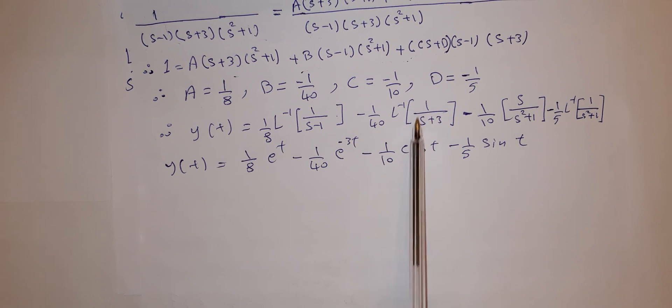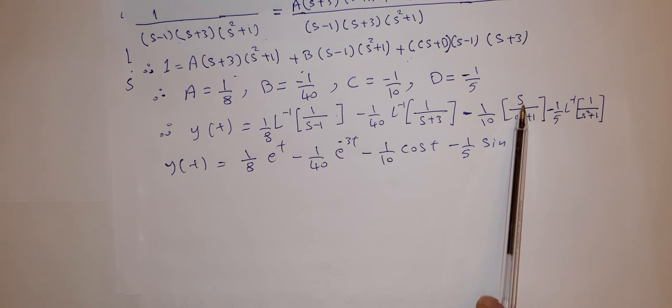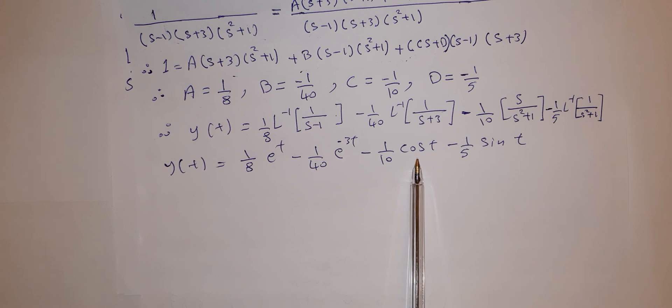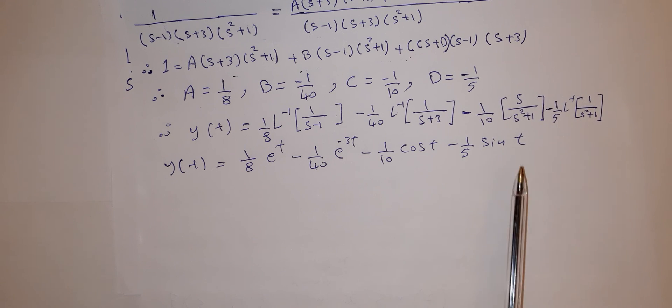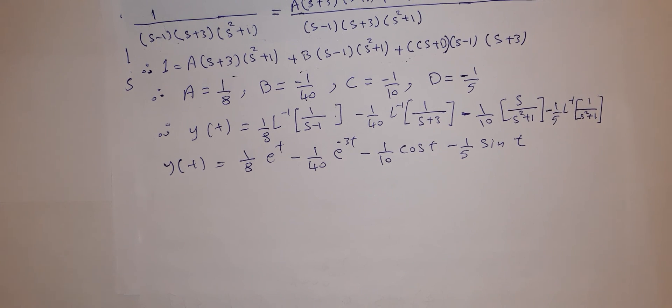And here, 1 over s plus 3, its Laplace inverse is e to the power negative 3t. s over s squared plus 1 is cosine t, and 1 over s squared plus 1 is sine t.